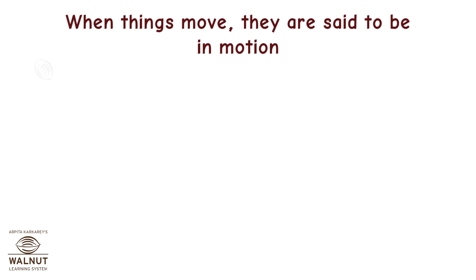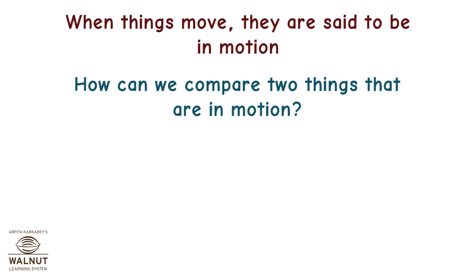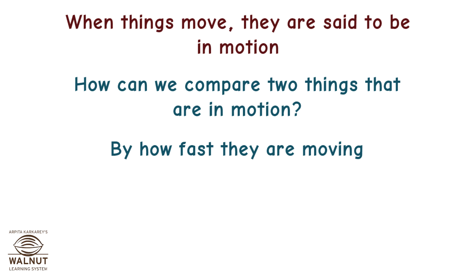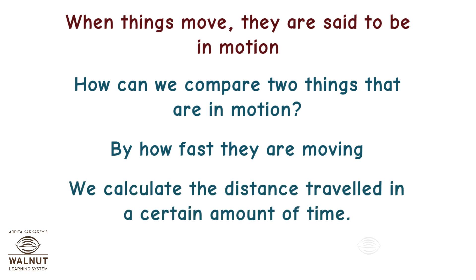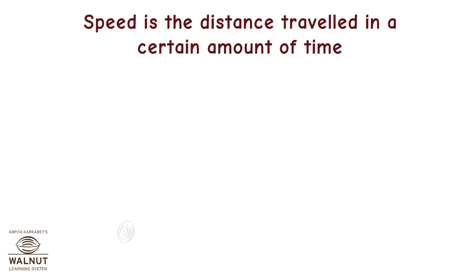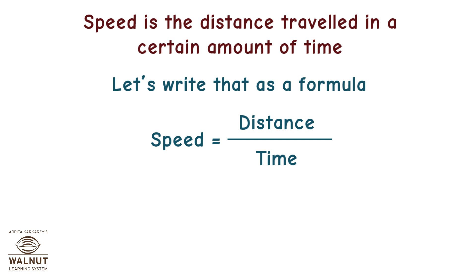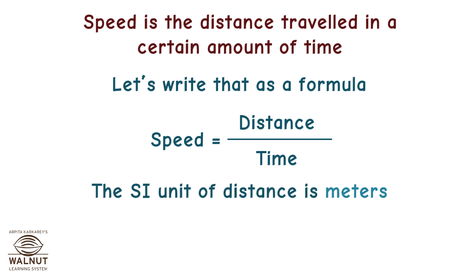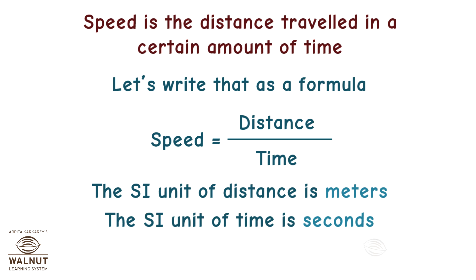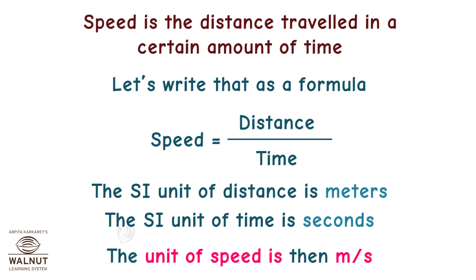When things move, they are said to be in motion. How can we compare two things that are in motion? By how fast they are moving — we calculate the distance travelled in a certain amount of time. That is Speed. Speed is the distance travelled in a certain amount of time. Speed is equal to distance divided by time. The SI unit of distance is meters, the SI unit of time is seconds, so the unit of speed is meters per second.